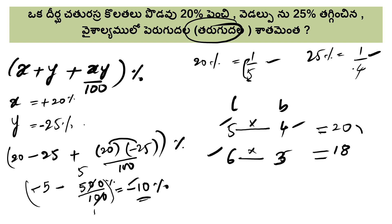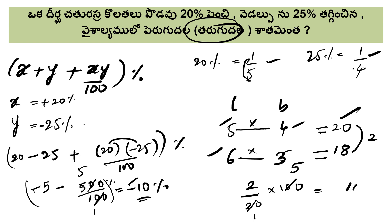20 minus 18: the difference between these two numbers is 2. So 2 by 20 into 100. 2 by 20 into 100 gives 10%. The answer is 10%. Without the formula, the answer is 10 percent.